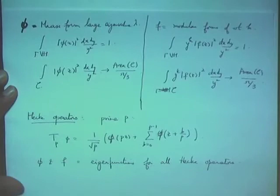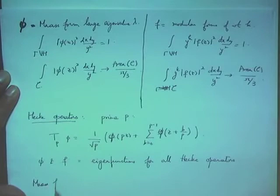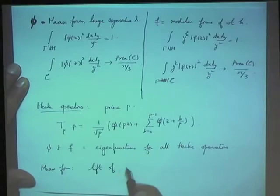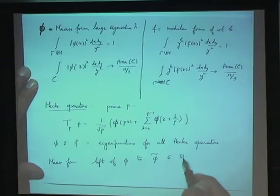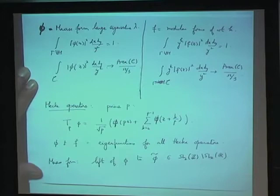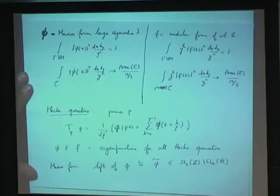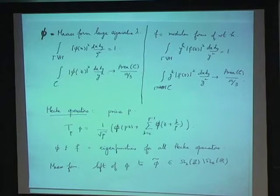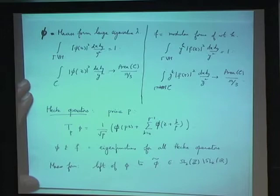In the Maass form case, Manfred has been talking about how you actually do something else — you're not studying the function phi on the surface. In the Maass form case, there's a lift of phi to some phi-tilde which lives on SL(2,Z) mod SL(2,R). This is a very interesting construction where you lift it to a function invariant under the geodesic flow, and then you can get started with the dynamics approach.